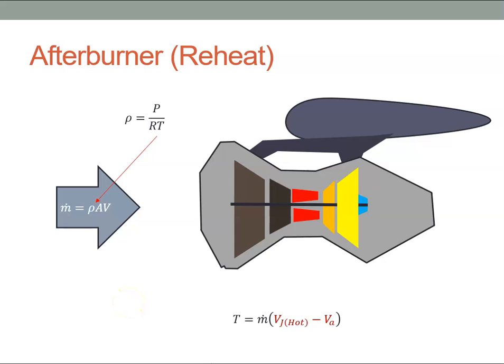Another way to augment thrust is to use an afterburner, or sometimes it's known as reheat. This can be useful when there are issues with temperature. If the outside air temperature is warm, that will lead to a reduction in air density, which creates a reduction in the mass flow and that will give us a reduction in thrust.